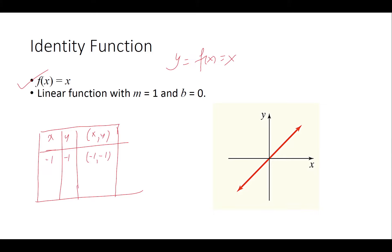For example, when x is negative 1, y is negative 1, giving the point (−1, −1). When x is 0, y is 0, giving (0, 0). When x is 1, y is 1, giving (1, 1). Plotting these three points confirms the straight line, and since this is a linear function, three points are more than enough.